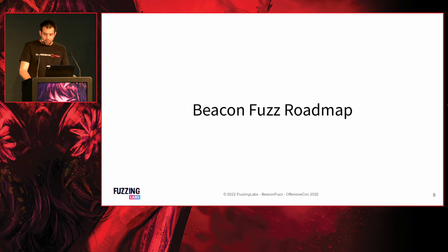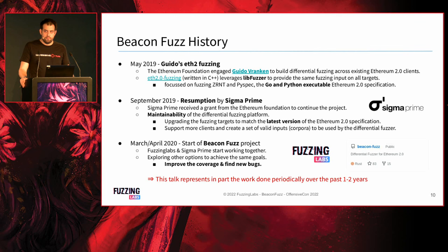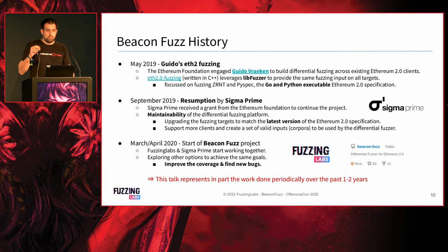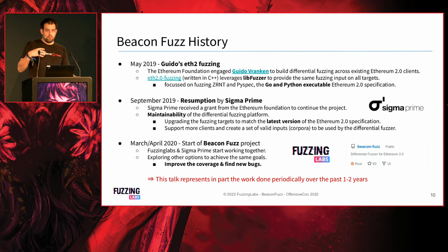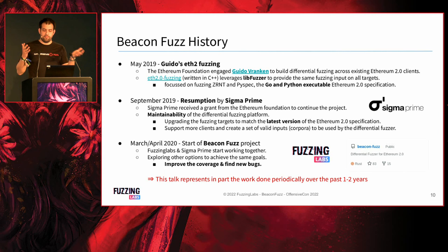Let's talk about BeaconFuzz - the fuzzer we wrote. I wrote it together with Sigma Prime, a company specializing in blockchain security and also the developer of the Lighthouse client. To give you some history: the project didn't start with me but with Guido, well known for the CryptoFuzz project, who does a lot of differential fuzzing. He created a proof of concept using libFuzzer written in C++ and started the work in 2019. After that, Sigma Prime took the lead and received a grant from the Ethereum Foundation to continue the project. Eventually I joined and we started the BeaconFuzz project together.